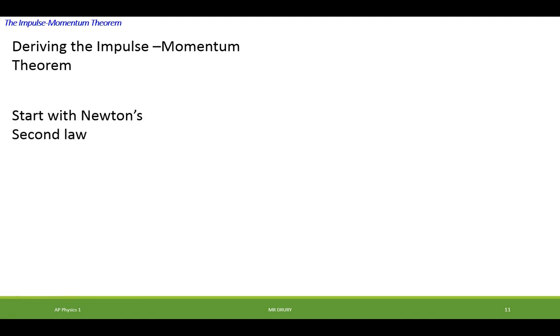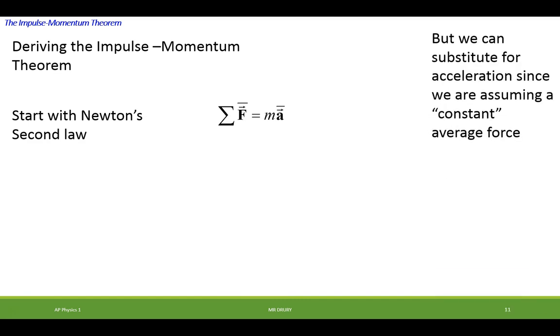I'm going to start with Newton's second law. F is equal to ma. But we can substitute for acceleration since we're assuming a constant average force. So if we have a constant force, then we should be able to use constant acceleration equations. And I can make this following substitution. Okay, I could put in for a, I could put all this in.